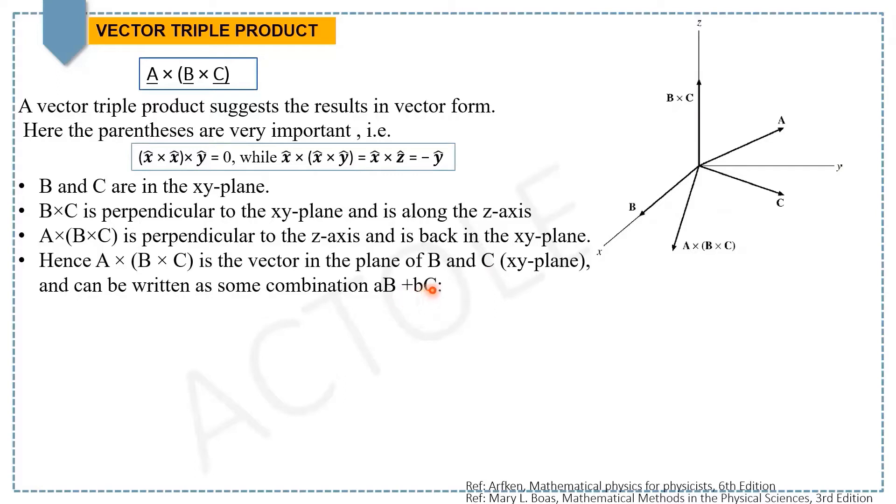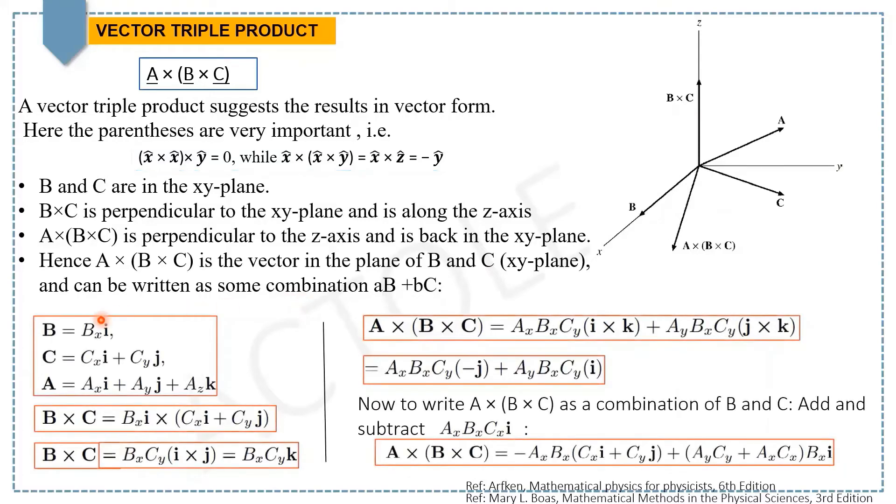Where a and b are scalars we want to find. One way to find them is to write vectors in component form. For example, B is along the x-axis, so B = Bx i. C is in the xy-plane,